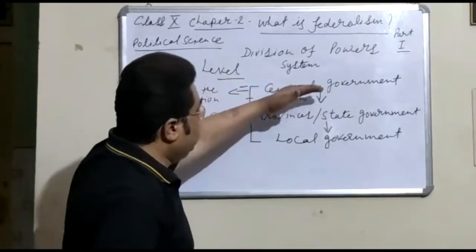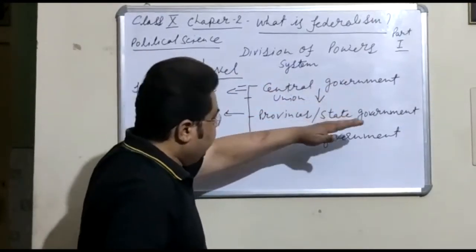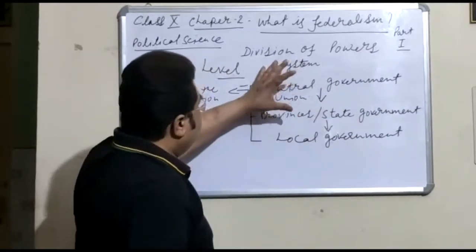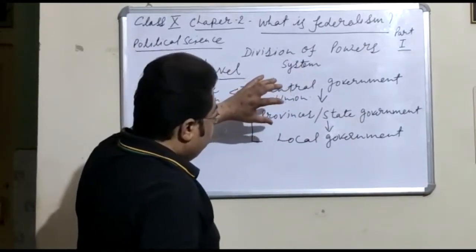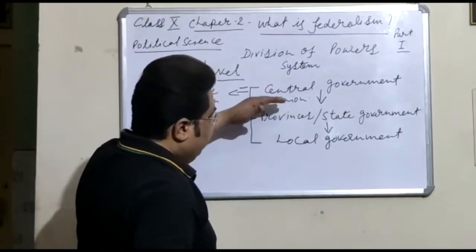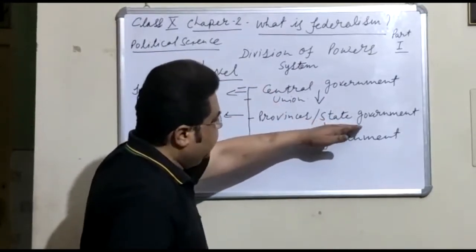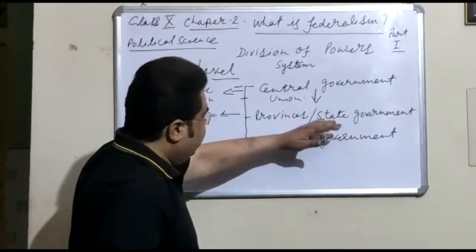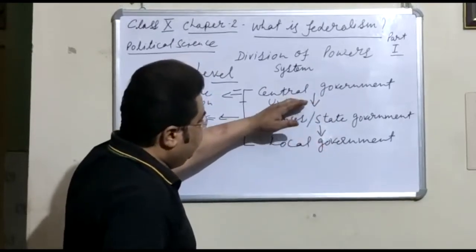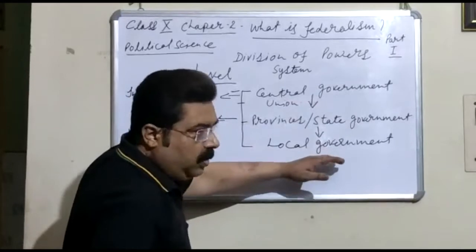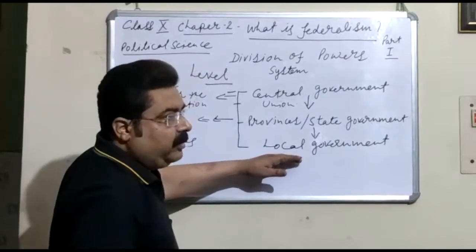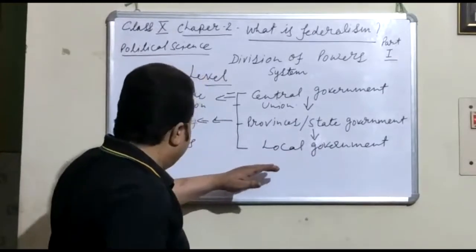The important thing is that all these levels are independent to use the powers. Independently, Central Government can use power, State Government can use power, and local government can use power. This is called the division of power — how powers are given to different levels. At the state level, they can take their own decisions. Central Government cannot dominate them, nor can it dominate the local governments. Local governments can also take decisions and use power independently.